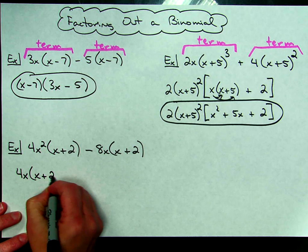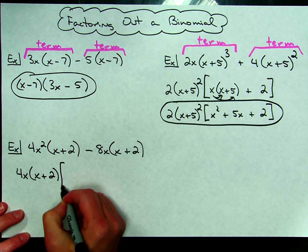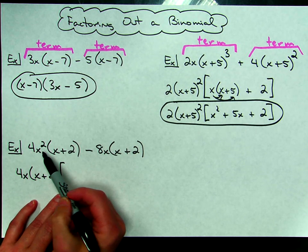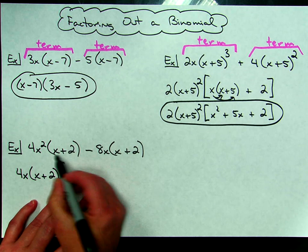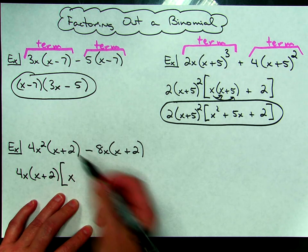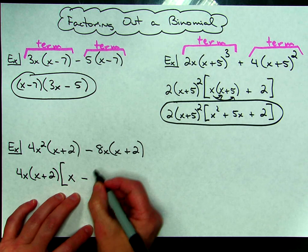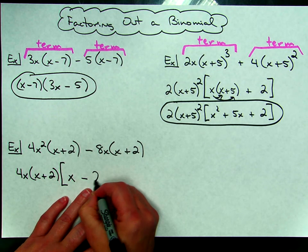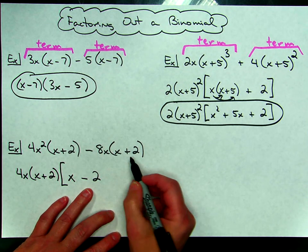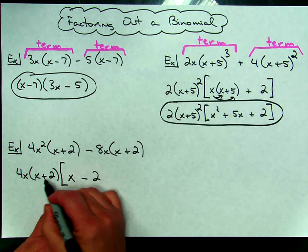I'm going to go ahead and use the square brackets here on this one, I take out the 4 of this first term, I've got two x's, I take one out, I'm going to have one x left over, I take out the binomial, then that's all I have left in that first term. I'm going to bring down the minus sign, I'm going to take the 8, factor out the 4, that'll leave me with a 2, the x got factored out, and the x plus 2 also got factored out, so it only leaves me with a 2.